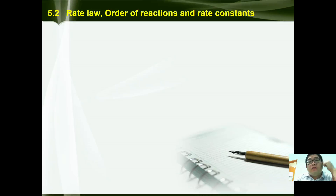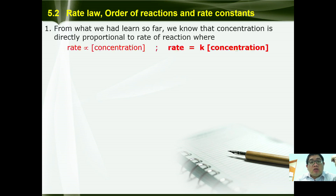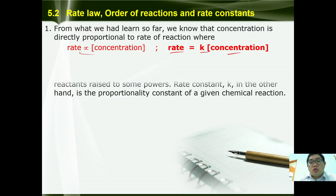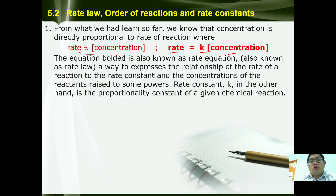Hello guys, this is the second video for kinetic chemistry where we're going to continue with rate law, order of reaction and rate constants. So what we have learned so far: concentration is directly proportional to rate of reaction, so rate is directly proportional to the constant. Deriving this proportionality, rate is equal to a constant times concentration. Such an expression is also known as a rate equation, also known as rate law, where it is a way to express the relationship of the rate of reaction to the rate constant and the concentration of reactants raised to some power.